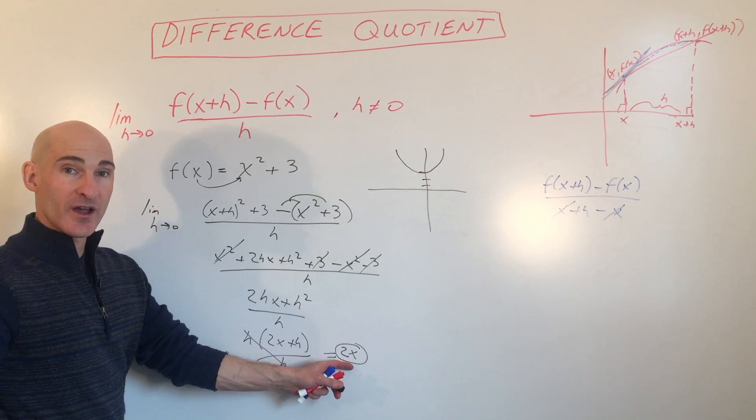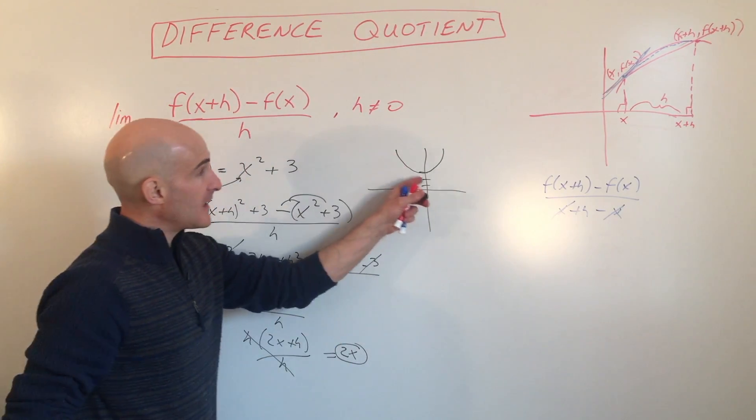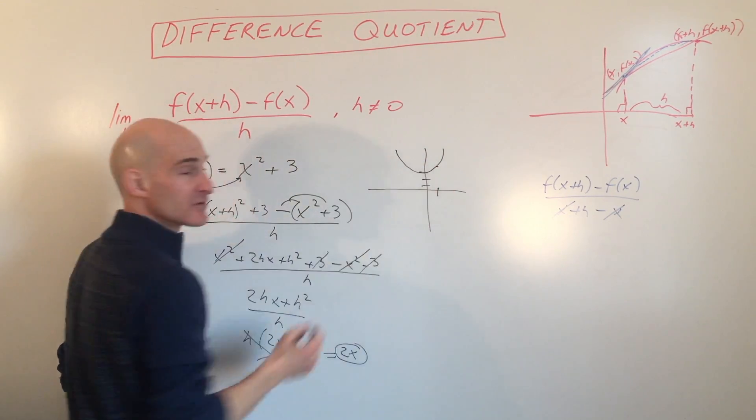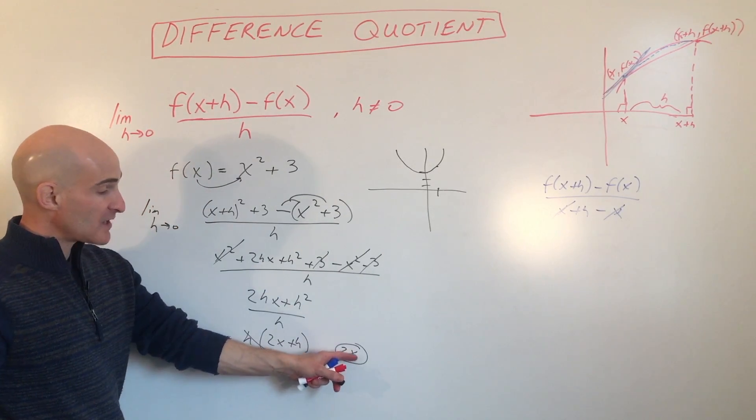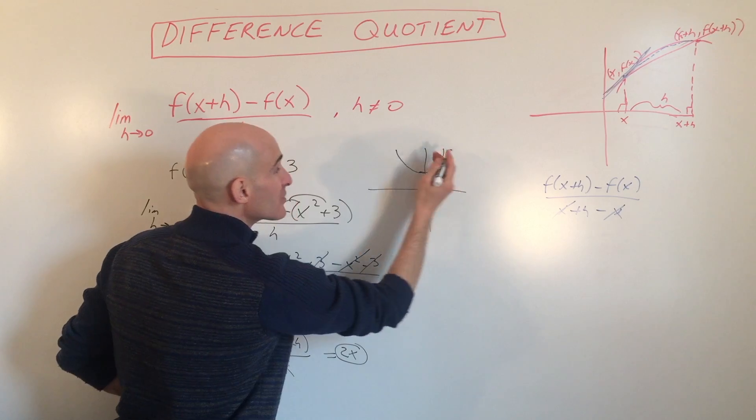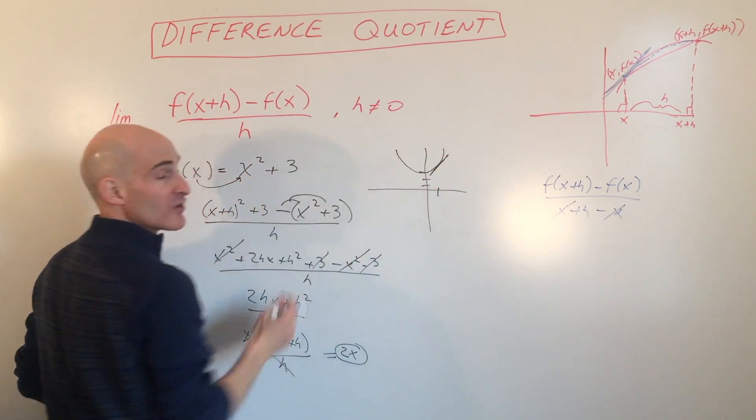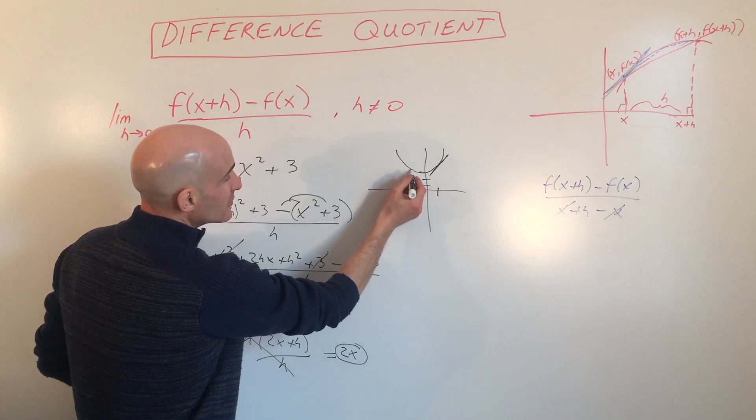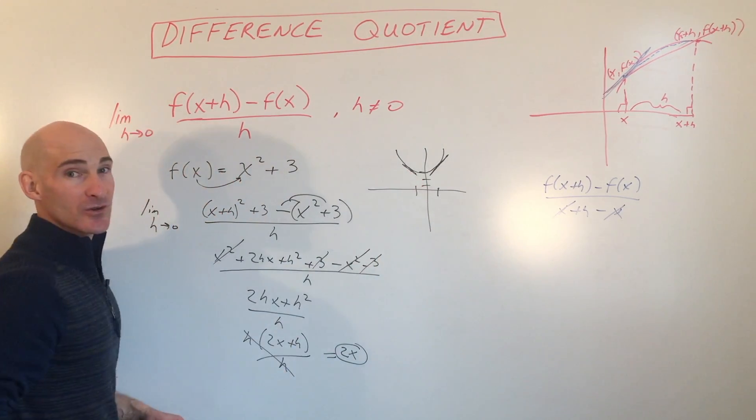This is a formula for the slope anywhere along this curve. For example, if we go to x = 1 and go up to the function there, 2 times 1 is 2, so the instantaneous rate of change, the slope at that point, is 2. If we put x = -1 and go up to the curve, that has a slope of -2.